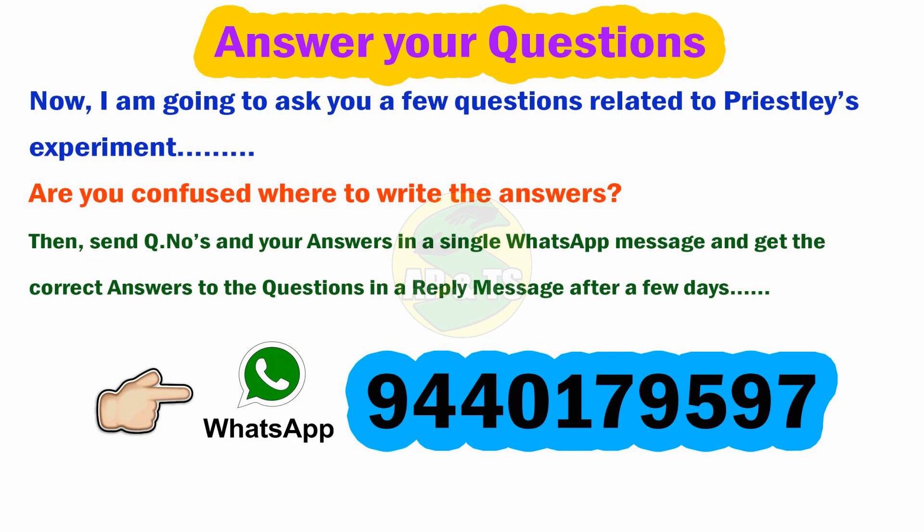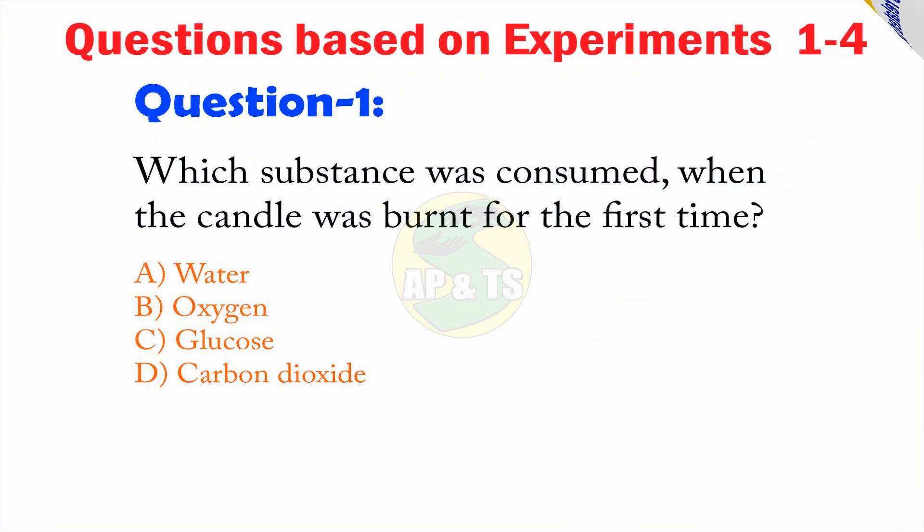Question 1: Which substance was consumed when the candle was burned for the first time? A — Water, B — Oxygen, C — Glucose, D — Carbon Dioxide. What is your answer?